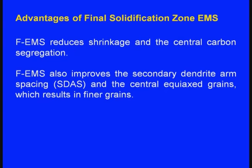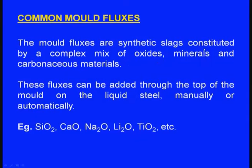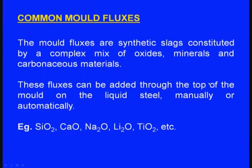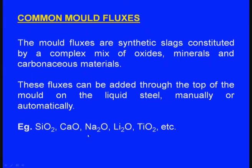Next, let us see the common mold fluxes used in the continuous casting process. Mold fluxes are synthetic slags constituted by a complex mix of oxides, minerals, and carbonaceous materials. These fluxes can be added through the top of the mold on the liquid steel, manually or automatically. Common flux materials include silicon dioxide, calcium oxide, sodium oxide, lithium oxide, and titanium dioxide. A mix of any of these can be used as mold fluxes.